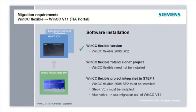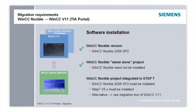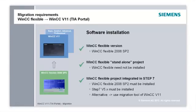When using a standalone project, WinCC Flexible need not be installed on the computer for migrating to WinCC version 11. When using a WinCC Flexible project integrated in Step 7, WinCC Flexible and Step 7 must be additionally installed on the computer. Alternatively, the migration tool can be used, which is available on the installation DVD of WinCC version 11 under Support.